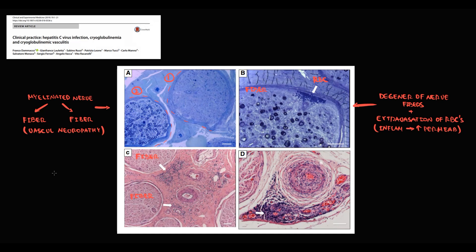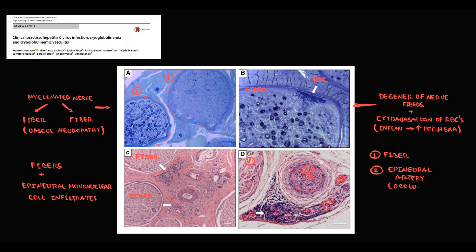On the third image, nerve fibers show epineural mononuclear infiltrates. On the last image, nerve fibers and an epineural artery are visible — the artery is occluded by a thrombus, with deposition of connective tissue around it as a sign of fibrosis, and epineural infiltrates as a sign of inflammation.